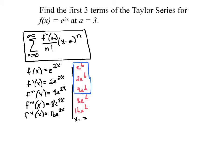So, e to the 2x at a equals 3. So the first term, we take e to the 6th over 0 factorial, because it's the 0 derivative, and then we have x minus 3 to the 0 power. You probably don't need to write that, but I'm going to for the first few here.